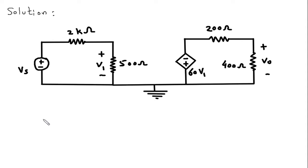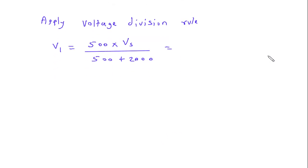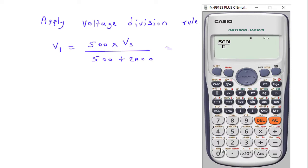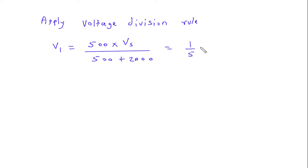Now we will apply voltage division rule to find V1. So V1 is equal to 500 into Vs by 500 plus 2000. This is equal to 500 by 500 plus 2000. So this is 1 by 5 Vs. V1 is equal to 1 by 5 Vs.